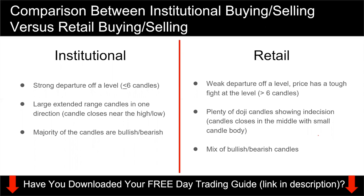Retail traders like you and I do not have large capital — we are not entering 500 lots. So when we buy, we don't really move price. But when institutional players buy, they move price in a very explosive manner. If you see a very weak departure of a level and price is really struggling there — more than six candles at the base — then that is more of a retail buying. You'll also see plenty of doji candles with a lot of indecision, and a good mix of bullish and bearish candles.